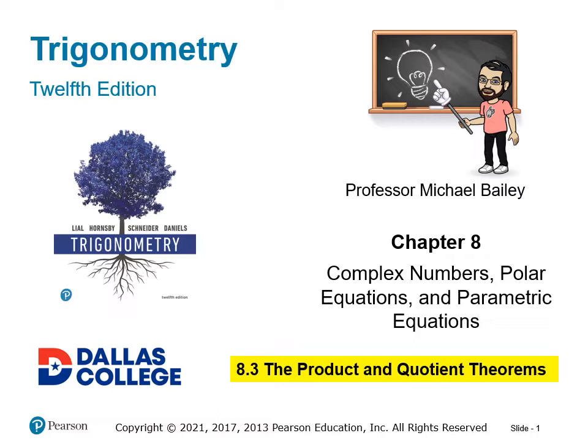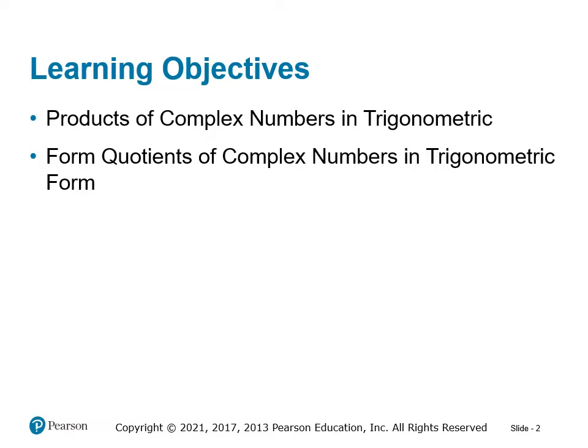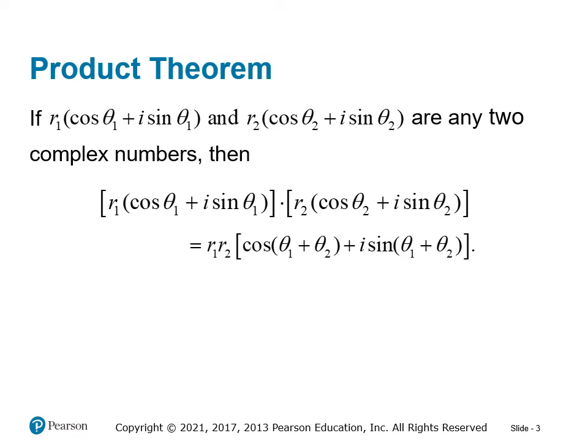This is a trigonometry topic. Specifically, polar forms provide an easy way to multiply complex numbers and also divide them. So we're going to look at how to do products of complex numbers in trigonometric form as well as quotients of complex numbers. This is a relatively simple idea.